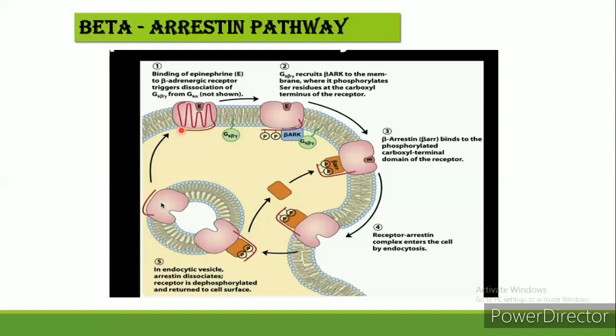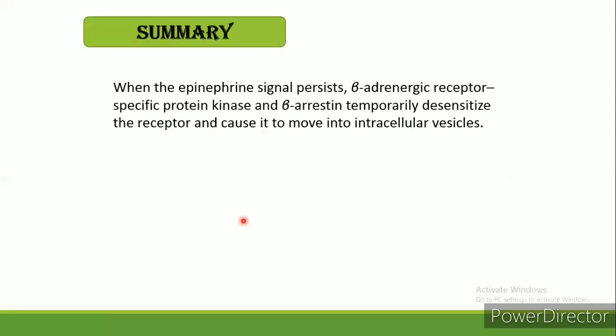These are all steps of the beta-arrestin pathway — how to terminate the beta-adrenergic pathway with the help of beta-arrestin protein. In summary: when the epinephrine signal persists, beta-adrenergic receptor-specific protein kinase and beta-arrestin temporarily desensitize the receptor and cause it to move into intracellular vesicles. Thank you, I will stop here.